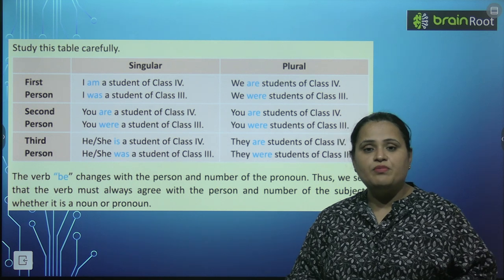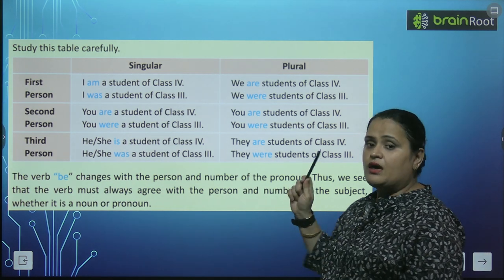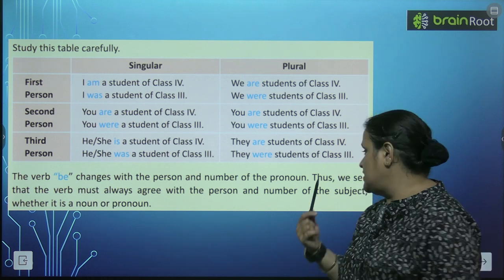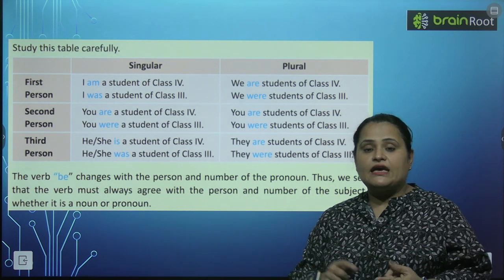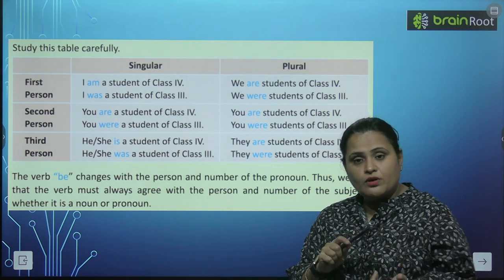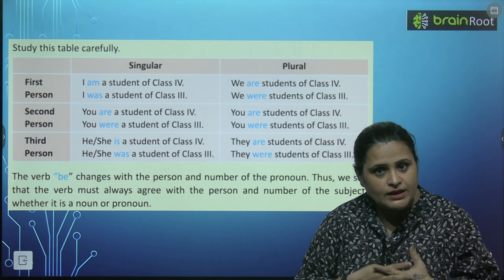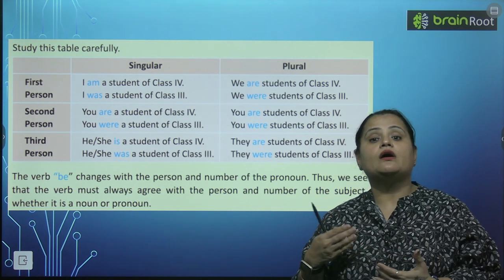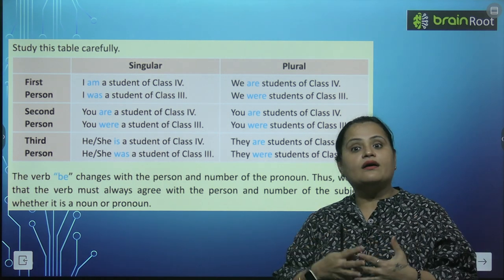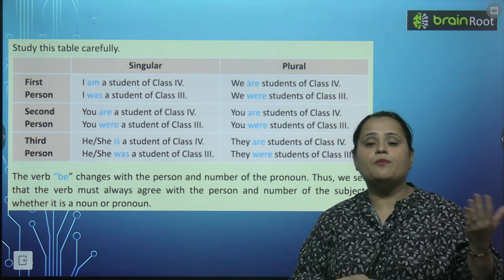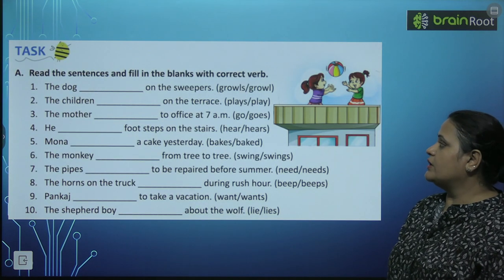So, the verb bhi changes — is, are, am, was, were — with the person and number of the pronoun. In ke saath joh ye verbs hain, ye change hoti hain. Thus, we see that the verb must always agree with the subject. Agar ham ek ki baat kar rahe hain toh 'is' aata hai, do ki baat kar rahe hain toh 'are' aata hai. Verb change ho jaati hai according to the number of people or things. Ye hota hai subject and verb agreement.